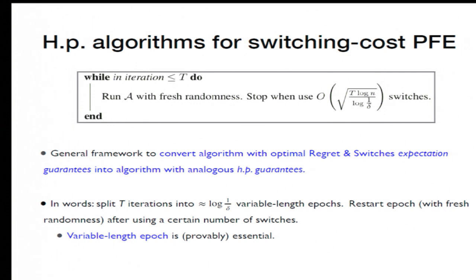And the idea is to, in each epoch, run your primitive algorithm until you've used a lot of switches, and then you end the epoch and restart with fresh randomness. So two remarks, the first is the fresh randomness is needed just for concentration. The second remark is about the variable length epochs, and this is more nuanced.